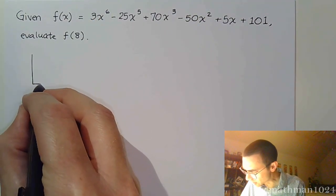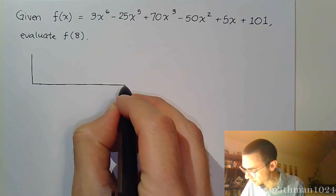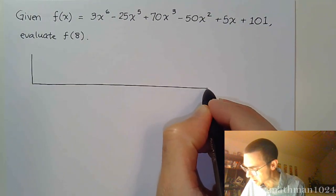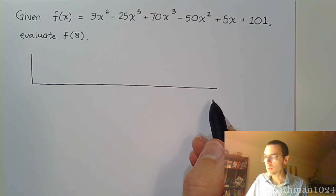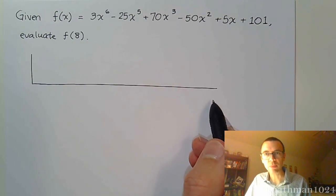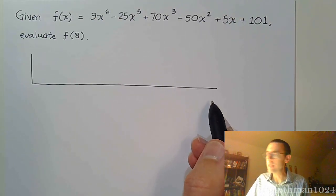So, the remainder theorem says that when I do synthetic division using this input value, the remainder will be the same as if you had evaluated the function, in this case at 8.